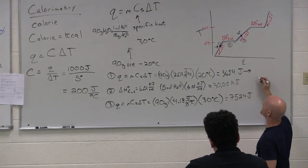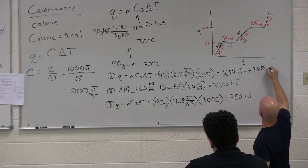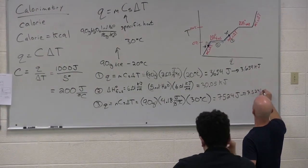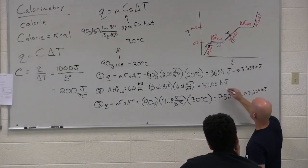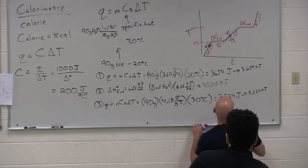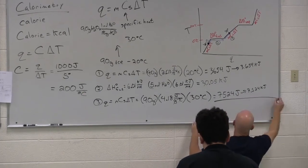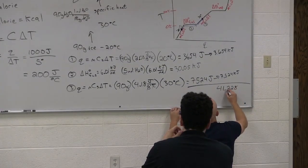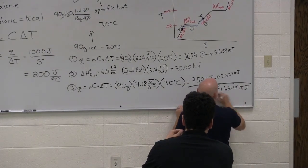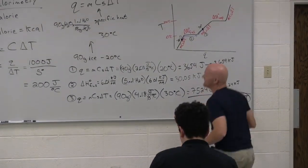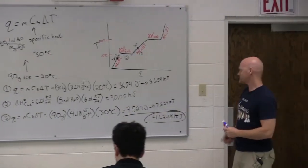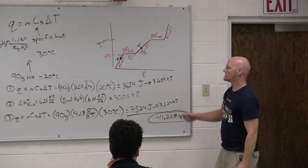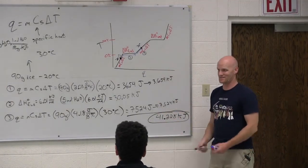In this case, to turn joules into kilojoules, I've got to divide by 1,000. So this is 3.654 kilojoules, and this is 7.524 kilojoules. And if we add all three of these together in kilojoules, what do we get? 41.228 kilojoules. Life is good. Notice, the more phase changes you go through, the more calculations you get.